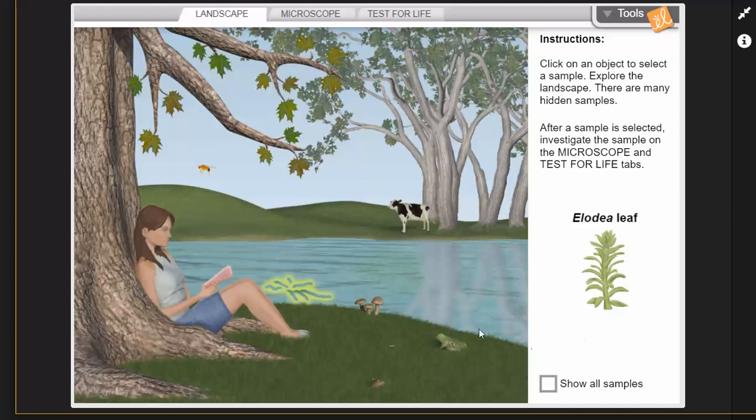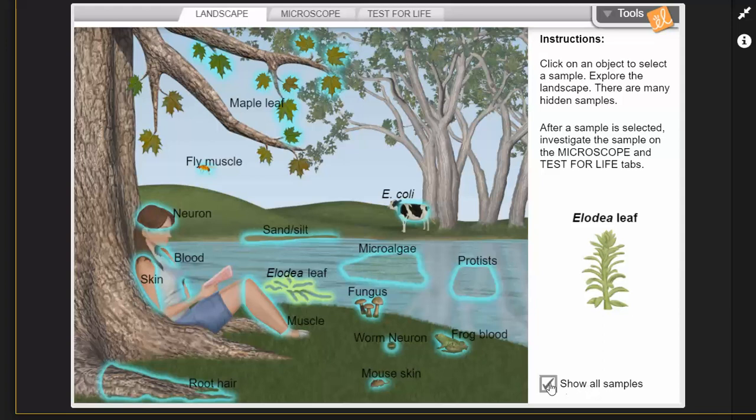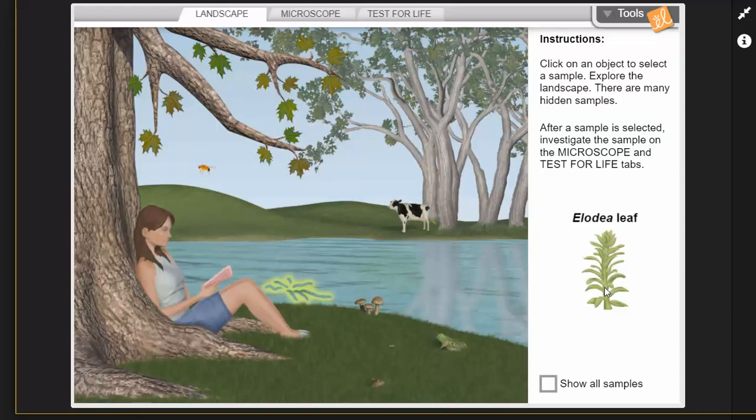There's lots of samples hidden in here, so when you guys are doing your investigation if you don't want to be searching for them and getting them to highlight like I have, just click this button right here and you can see them all. But for today we're going to focus on this elodea leaf. This is my sample and then we're going to look over at the microscope tab.